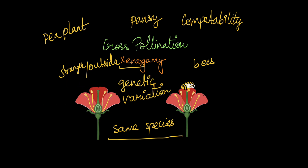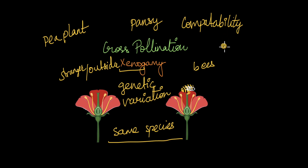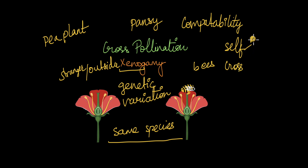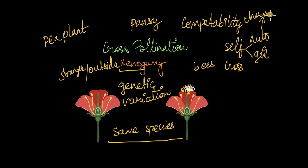This covers the different types of pollination. There are two main types: self-pollination and cross-pollination. Within self-pollination, you have autogamy and geitonogamy, and within autogamy you have two types of flowers: chasmogamy and cleistogamy.